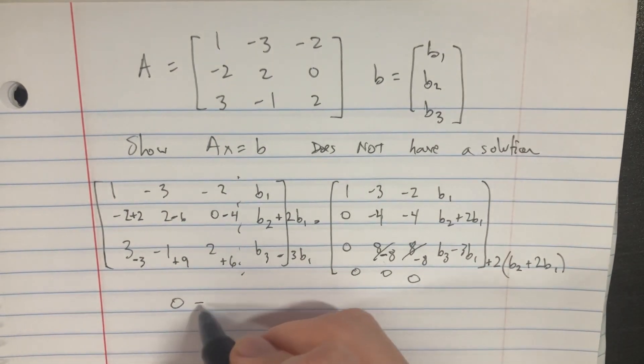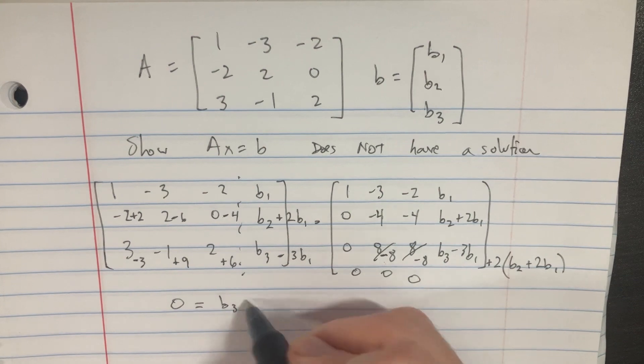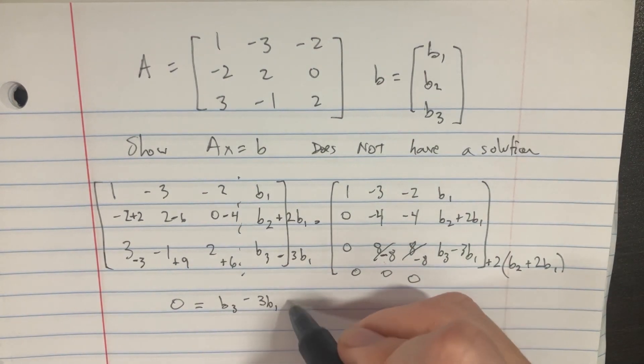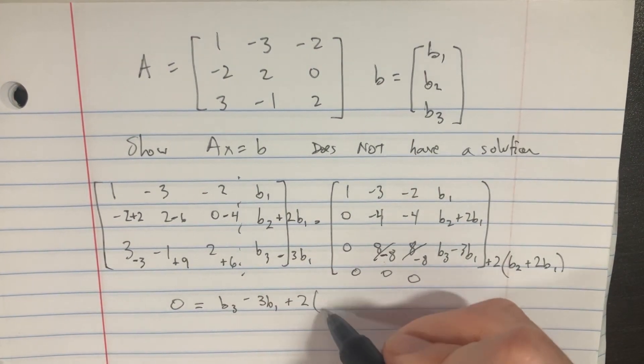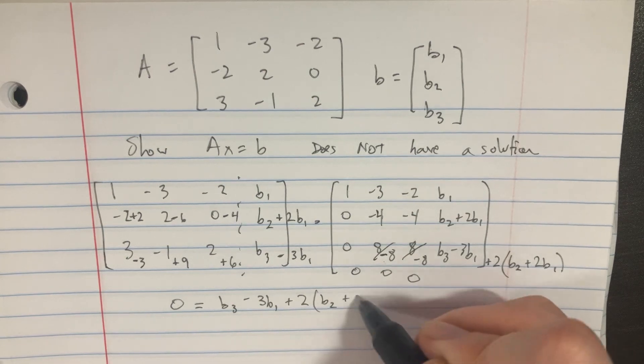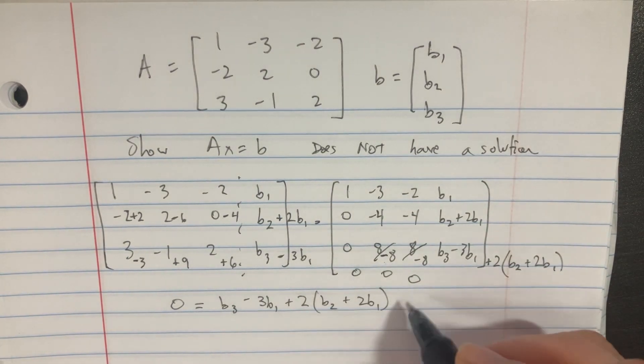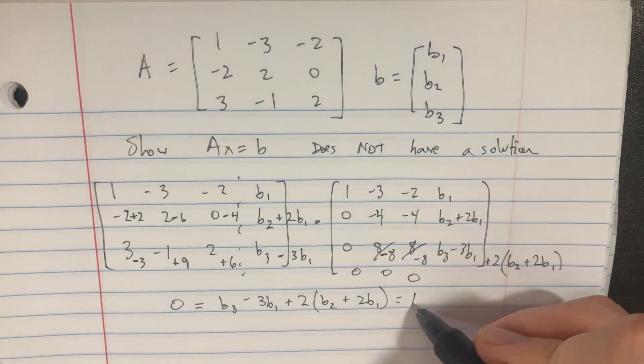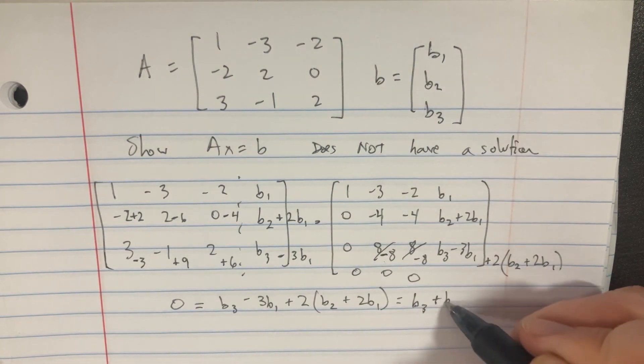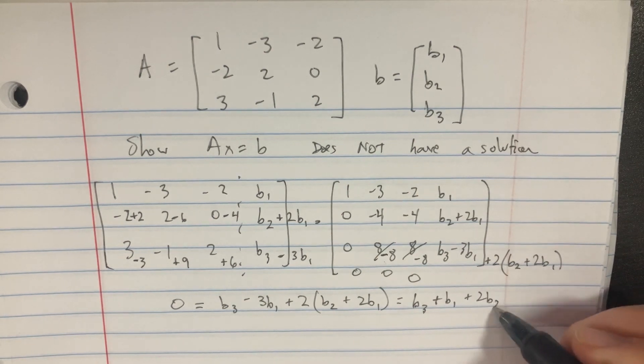So you have this expression that 0 equals b3 minus 3b1, or plus 2 times b2 plus 2b1. And this will simplify down into b3 plus b1 plus 2b2.